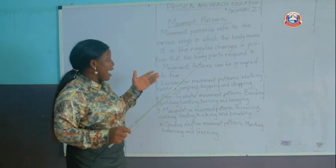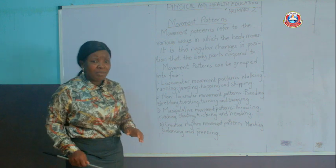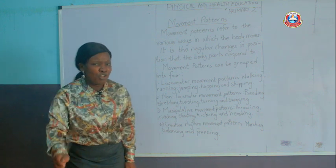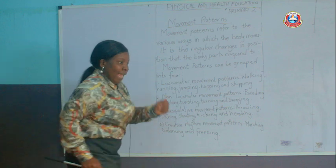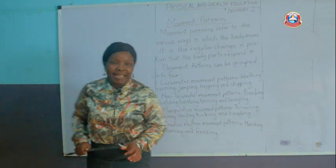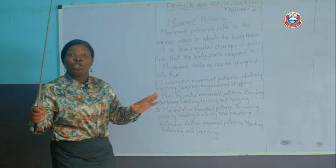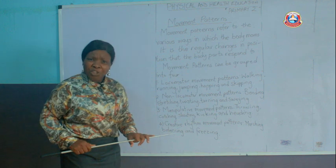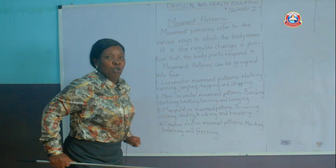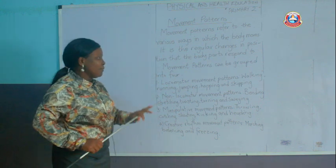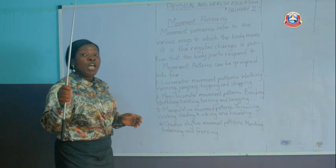Another example under locomotive movement patterns is running. You don't stand on the spot and run — you run on the tracks, moving to and fro, moving your whole body. Then we have jumping. Watch me as I jump — this is another kind of example under locomotive movement patterns.